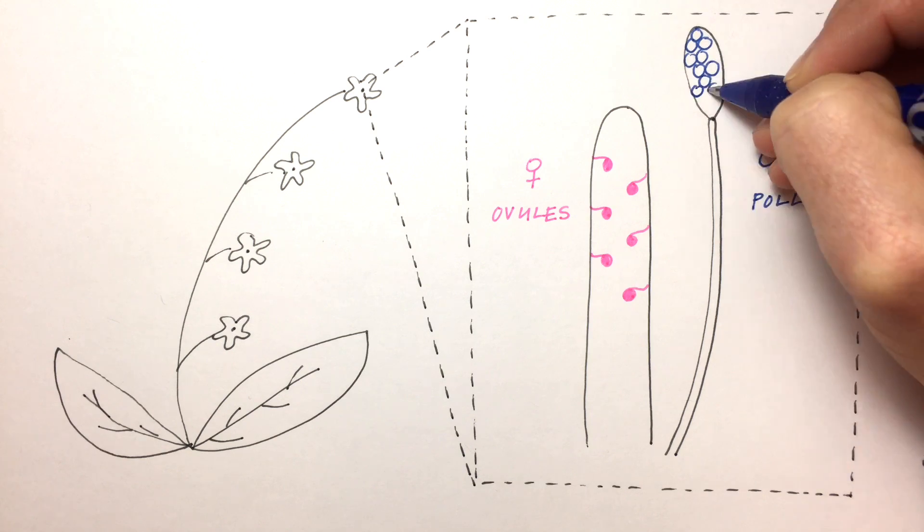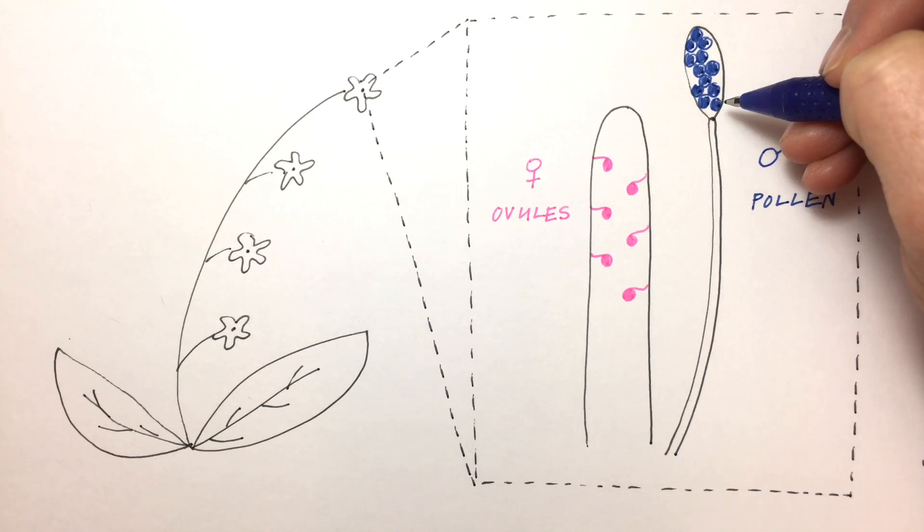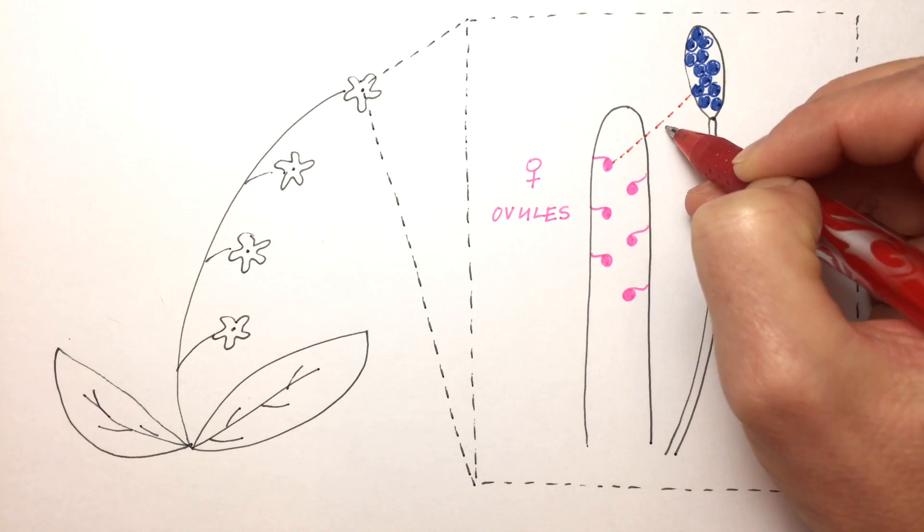A lot has to go right, but when it does, the pollen and ovules get together and create the seed—the next generation.